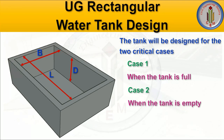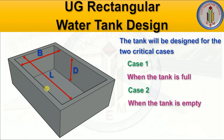In the previous part we discussed two critical cases for designing the rectangular water tank. Case 1 is when the tank is full, and case 2 is when the tank is empty. When the tank is full, we have both soil pressure and water pressure acting on the walls. When the tank is empty, we have only soil pressure on the outer side of the wall.